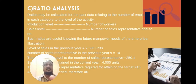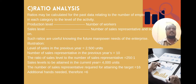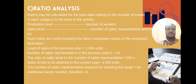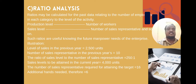Third, ratio analysis — ratios are calculated from past data relating to the number of employees in each category to the level of activity such as production level or sales level. For example, if the level of sales in the previous year was 2,500 units with 10 sales representatives, the ratio is 250:1. If the sales target for the current year is 4,000 units, then 16 sales representatives are required, meaning 6 additional staff are needed.